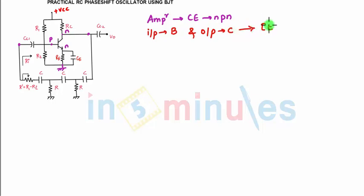In the feedback network you have RC, so it is called a practical RC phase shift oscillator using BJT. Now R dash is written as R minus RI. This resistance R minus RI, where RI is nothing but the input resistance of BJT.